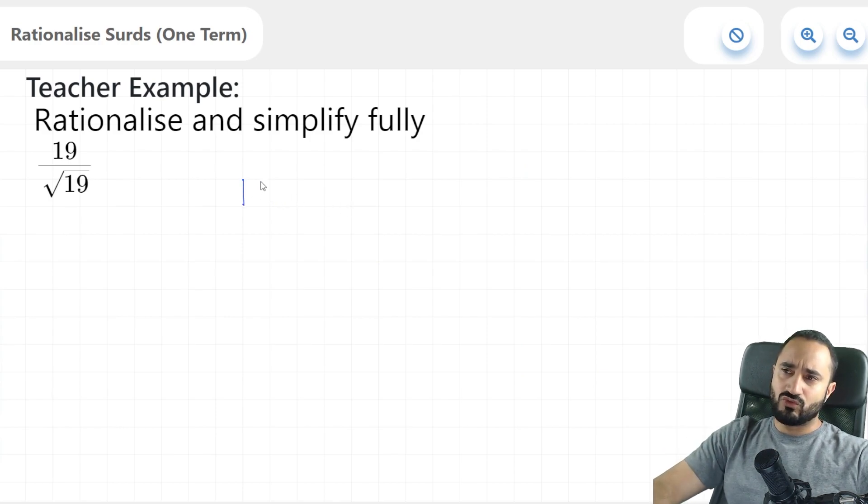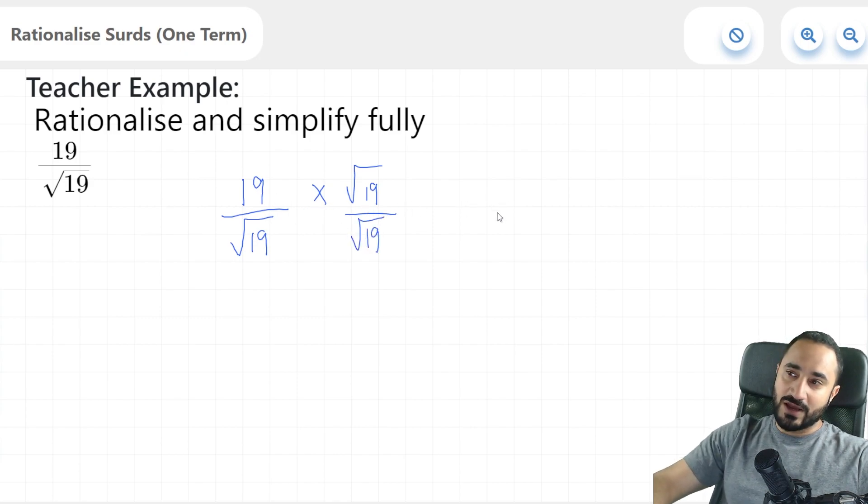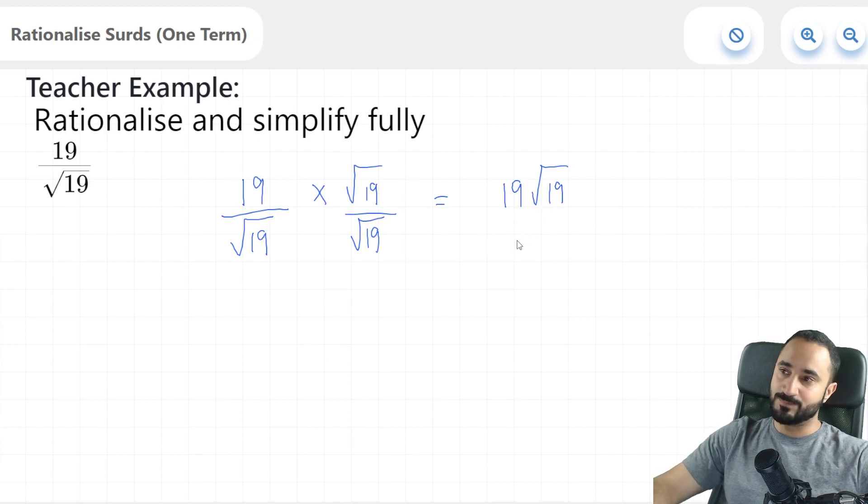Here we're being asked to rationalize 19 over the square root of 19. And we're going to do it in the same way that we did the previous example. I'm going to multiply the numerator and denominator by this root 19. Whatever you end up having here is what you multiply to the numerator and denominator. And 19 multiplied by the square root of 19 is going to give us 19 root 19.